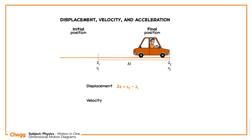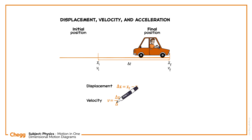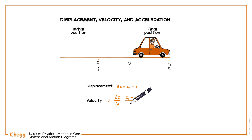The velocity v of the car is the change in position delta x of the car in the time interval delta t. That is, v equals delta x divided by delta t, which is equal to xf minus xi divided by delta t.